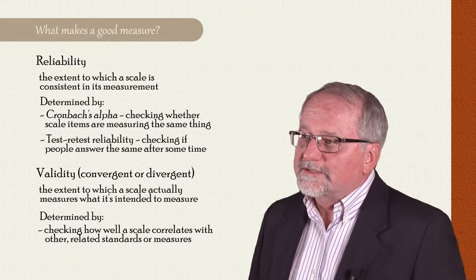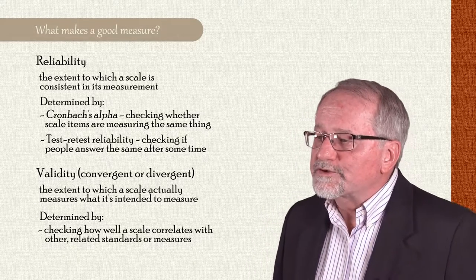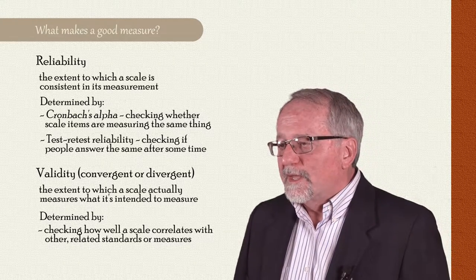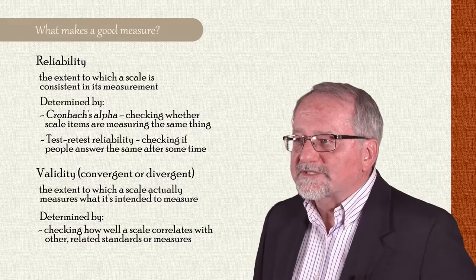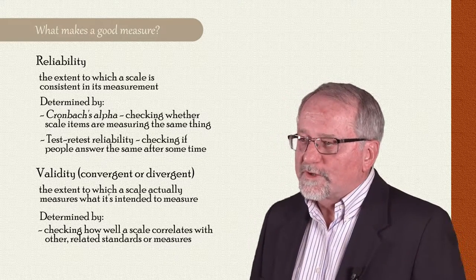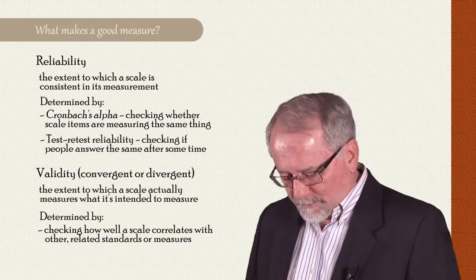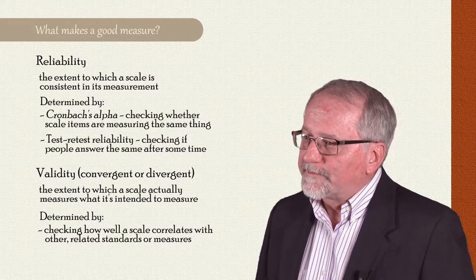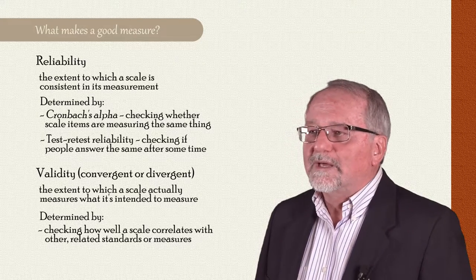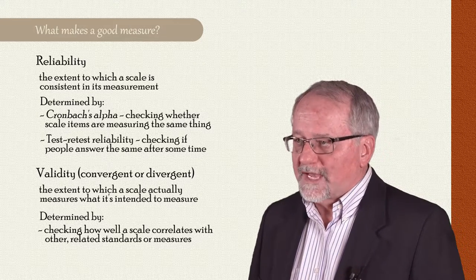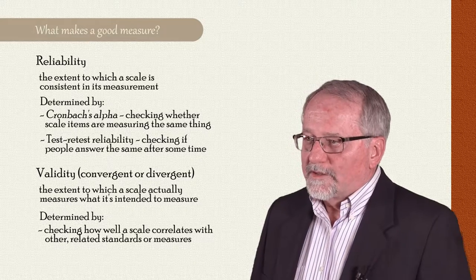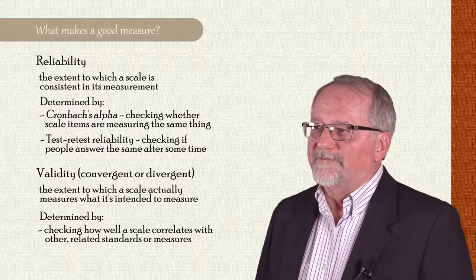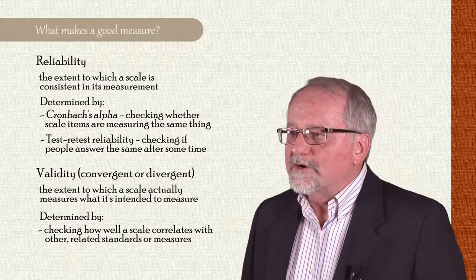In the case of humility, we might expect it to correlate closely with a measure of modesty, and if it does, we say that there is convergent validity. We might also expect it to negatively correlate with a measure of narcissism, and this too is a notion of convergent validity. Sometimes we expect a given scale to not be correlated with a measure to which it should be independent, and we refer to that as divergent validity. For example, a measure of humility we would expect to be unrelated to a measure of extroversion.